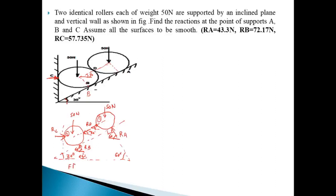So this is the free body diagram of the two spheres. For sphere 1, there are three forces acting — 1, 2, and 3 — out of which only two are unknown. So we can consider sphere 1 for the first calculation. If we consider the second sphere first, we have three unknowns: RC, RB, and RD. By simple equations of equilibrium, we can't solve that condition directly.